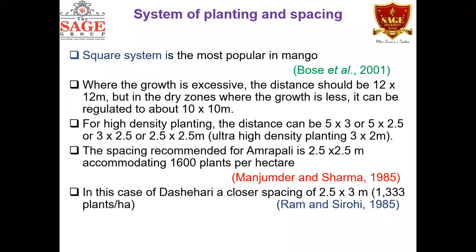If there are new shoots in December or January on a mango tree, they will go for new vegetative growth and will not give flowering. Techniques such as pinching, tip thinning, or dehorning are used for removal of these new growing flushes in December or January. The remaining mature shoots are then ready for producing new floral flushes.